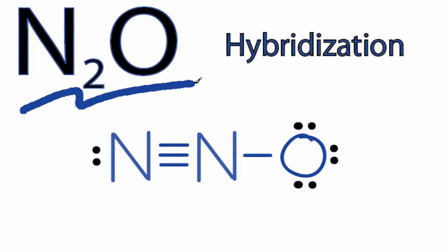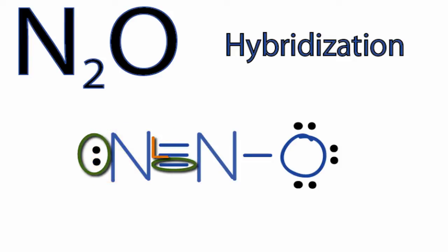Let's look at the hybridization for N2O. For the nitrogen atom on the left, we have a pair of unbonded electrons, then we have a sigma bond and two pi bonds.